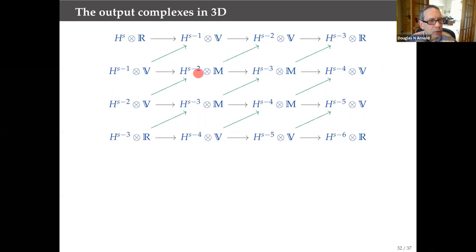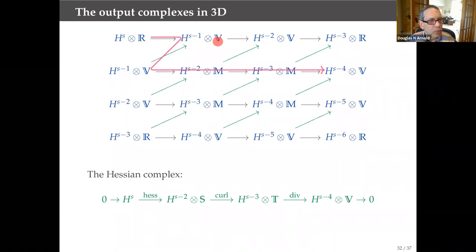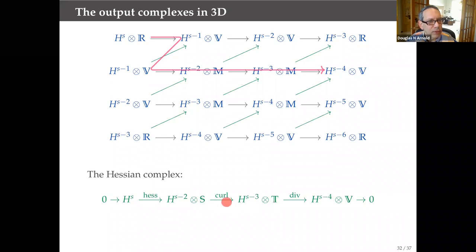If I take the first two rows — the scalar de Rham complex and the vector-valued de Rham complex — with their linking maps, then reduce the spaces (symmetric matrices appear as the orthogonal complement of skew-symmetric matrices in the space of all matrices), the new complex we obtain is nothing other than the Hessian complex: starting with Hs, dropping two orders to Hs−2 via the Hessian, then from symmetric matrices to trace-free matrices via the curl, and from trace-free matrices to vector fields via the divergence. So the Hessian complex comes from two de Rham complexes.